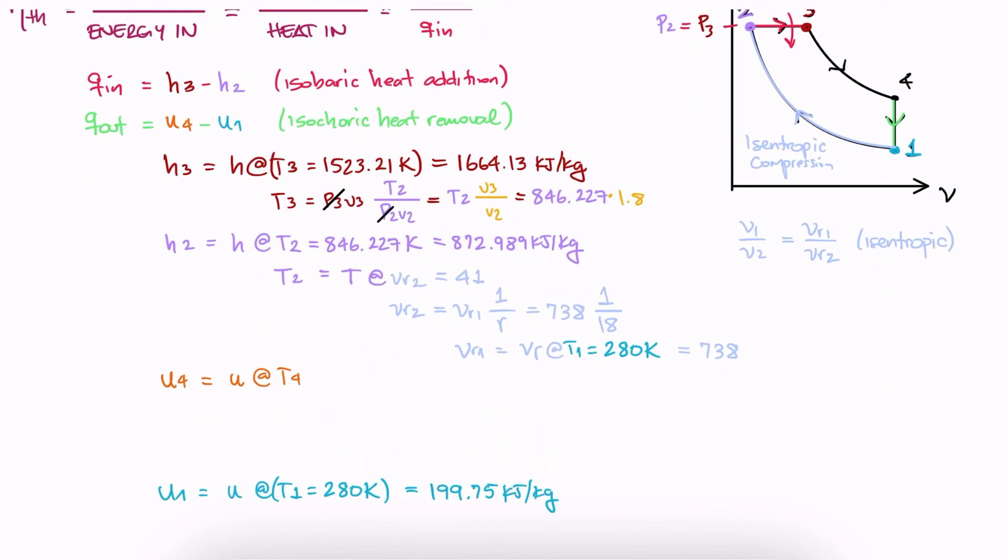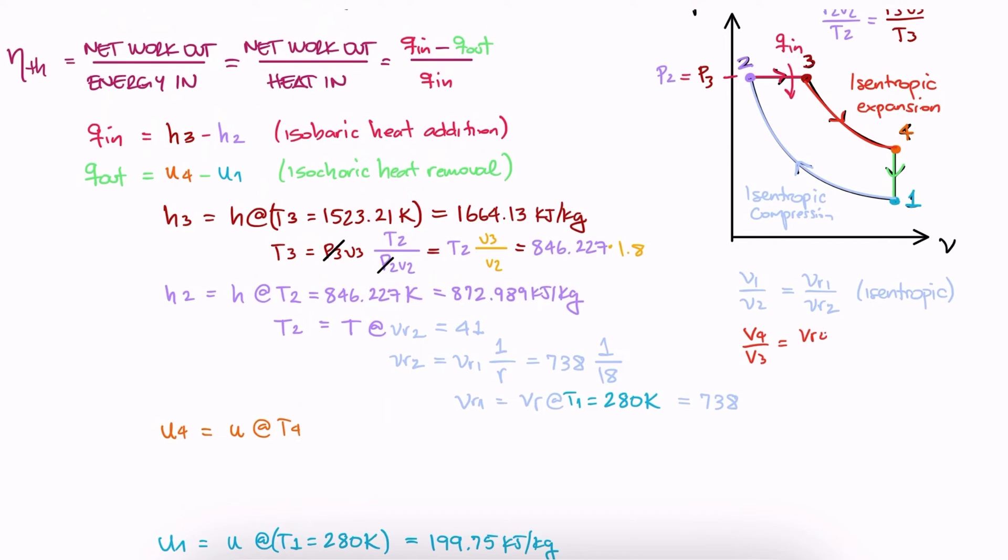And finally, between 3 and 4, we have an isentropic expansion, so we can use relative volumes again. The difference here is we don't directly have V4 over V3.